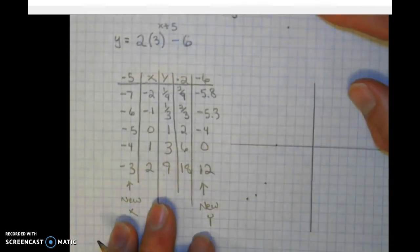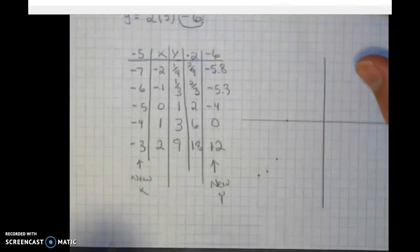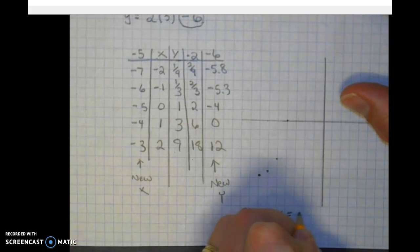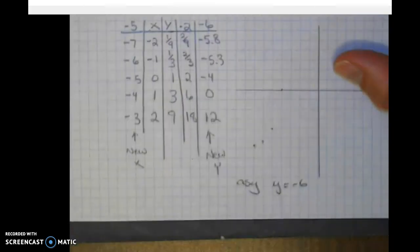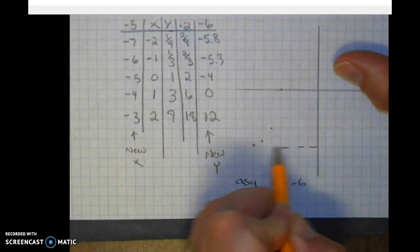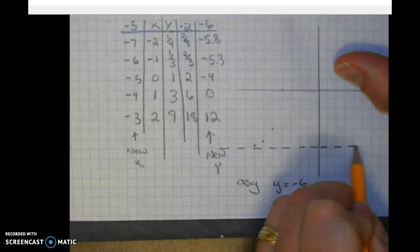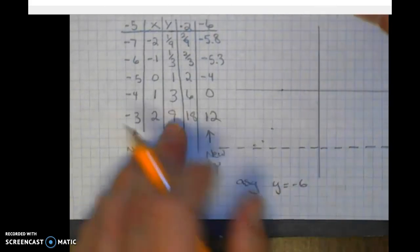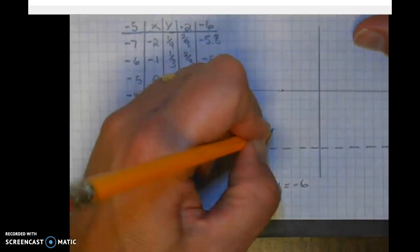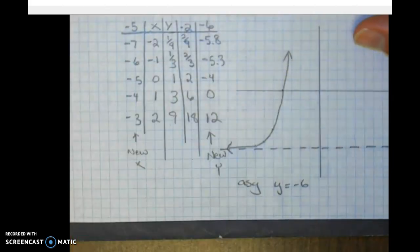So notice where our asymptote is. Always look at your k value. So we have an asymptote, a horizontal asymptote at y equals negative six. So we go down one, two, three, four, five, six. And this is where our horizontal asymptote is. Notice the graph is getting real close to it. In this case, it's not going to cross it.